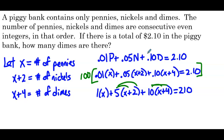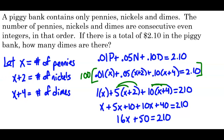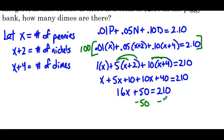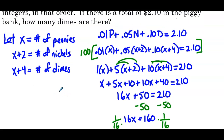Distributing the 5 and the 10, we get x plus 5x plus 10 plus 10x plus 40 equals 210. Combining all like terms: 16x plus 50 equals 210. Subtracting 50 from both sides: 16x equals 160. Multiplying both sides by 1/16, x equals 10. Rereading the problem: how many dimes are there? The number of dimes is x plus 4, and since x is 10, we have 14 dimes in the piggy bank.